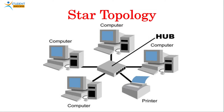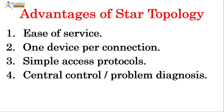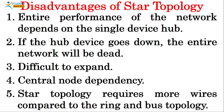The cable used in star topology is coaxial cable. This network looks like a star, which is why it's called star topology. Advantages: easy to service, one device per connection, simple access protocols, and central control for problem diagnosis. Disadvantages: the entire network performance depends on the single hub device — if the hub fails, the entire network goes down. It is difficult to expand, there is central node dependency, and star topology requires more wires compared to ring or bus topology.